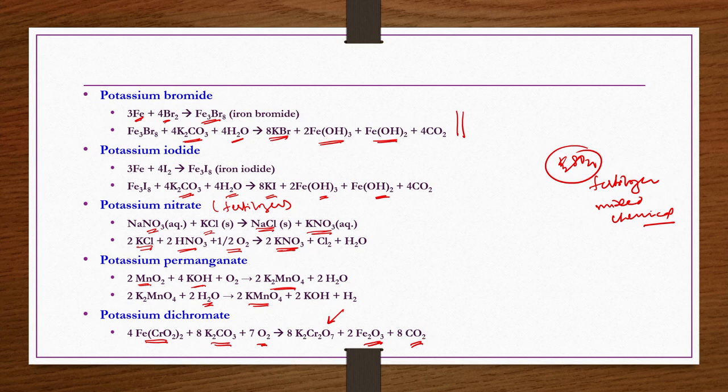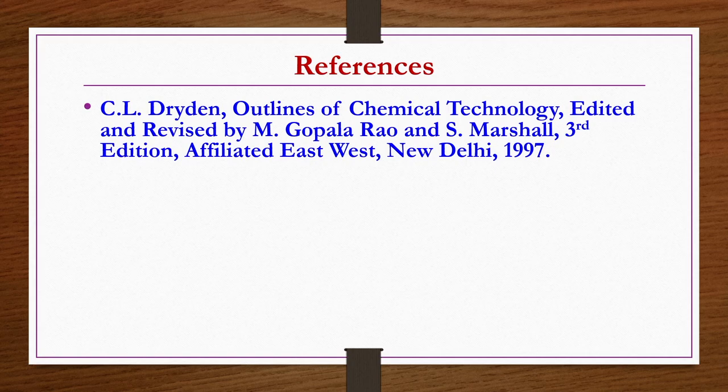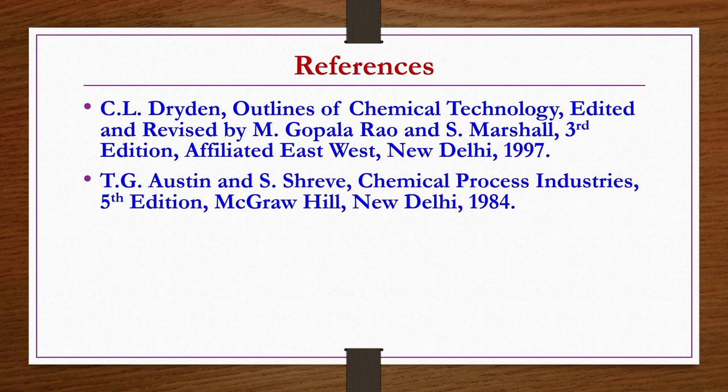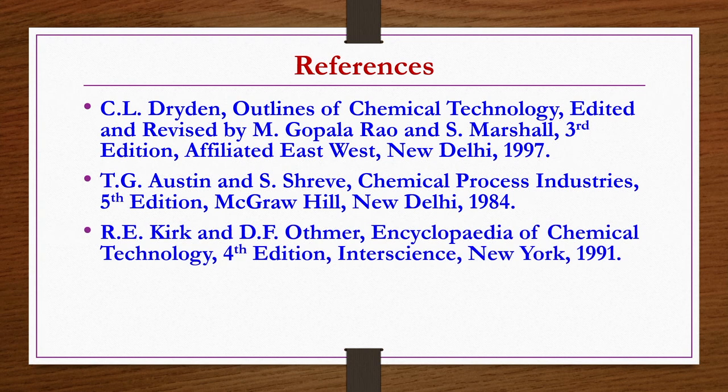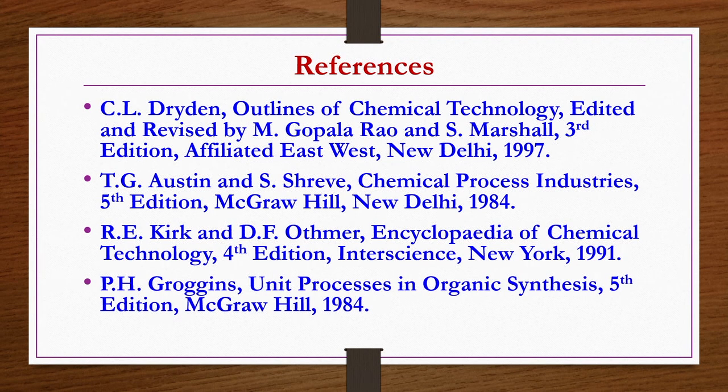References for this lecture: Outlines of Chemical Technology by Dryden, edited and revised by Gopalrao and Marshall, third edition; Chemical Process Industries by Austin and Shreev, fifth edition; Encyclopedia of Chemical Technology, fourth edition by Kirk and Atmar; and Unit Processes in Organic Synthesis by Grogin's, fifth edition. Thank you.